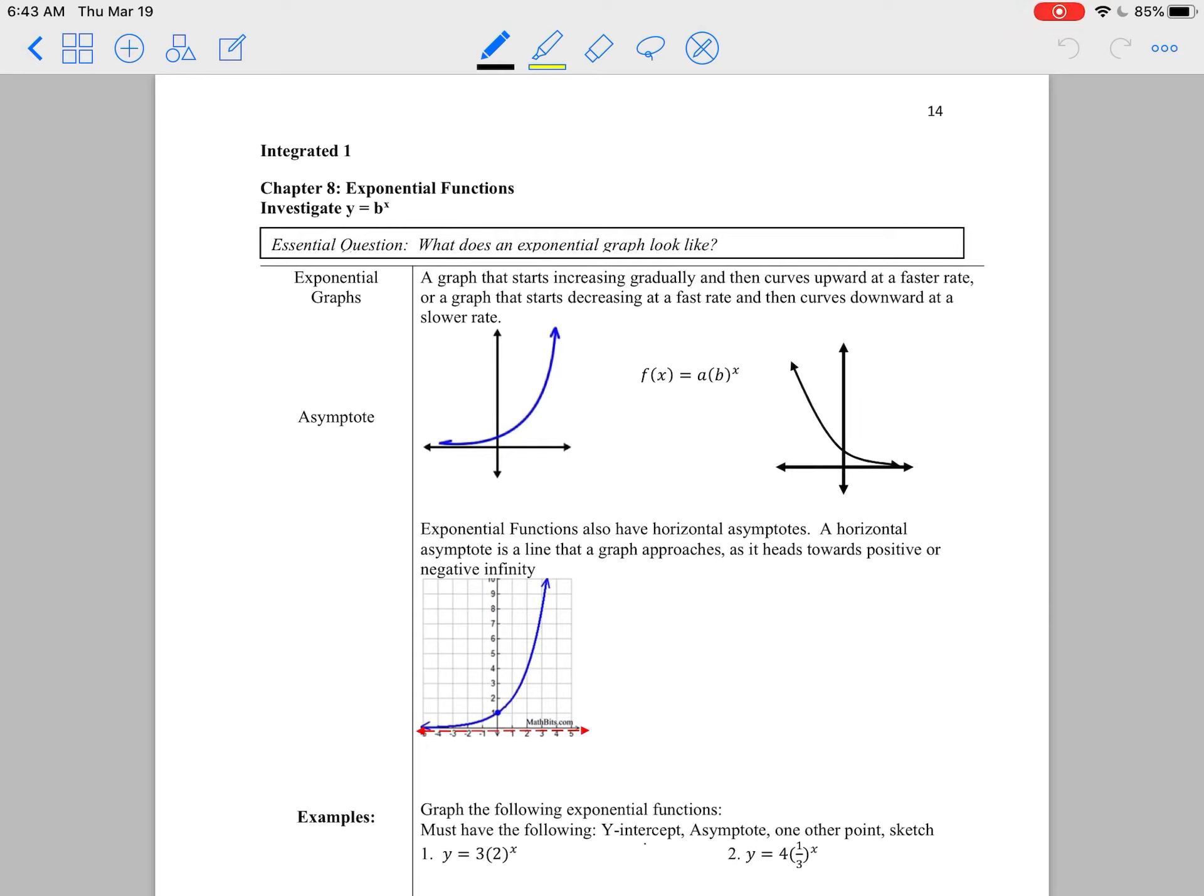Remember that the graph starts increasing gradually, and then it curves upward at a faster rate, or it starts high and goes low. Now when it's increasing from the left to the right, that means our b was greater than 1. And when it's decreasing from the left to the right, that means our b is between 0 and 1. We're looking at positive fractions.